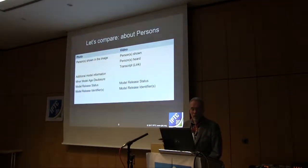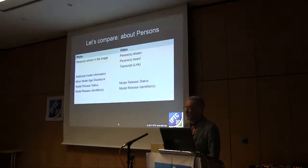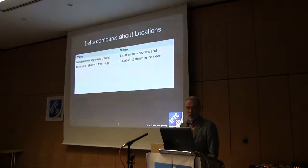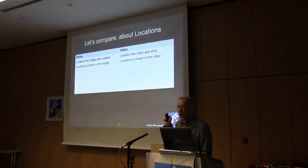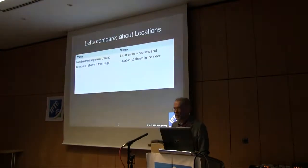Model release information is more typical of photos, but legally relevant metadata like model release is available for both photo and video. For locations, it's essentially the same fields: where a photo or video was shot, and the location shown in the photo or video.